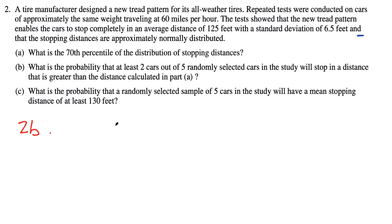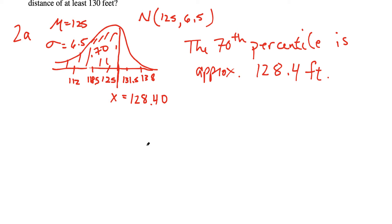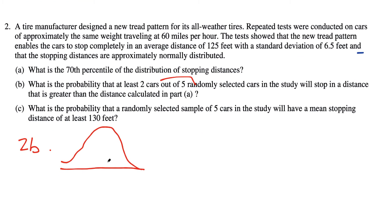So for 2B, it says, what is the probability at least two out of the five randomly selected cars in the study will stop in a distance that is greater than the distance calculated in part A? So what do we got? 128 point, got to get that 128.4. So that was the distance that we got. Let's put down mu equal to 125. Again, I'm drawing a separate curve because it's a separate problem. This is X equal to 128.4. And we know that the area is shaded to the right because it was the 70th percentile. So this area here is 30% of the curve. So the probability that a randomly selected car is above 128.4 should be 30% because that value was at the 70th percentile.